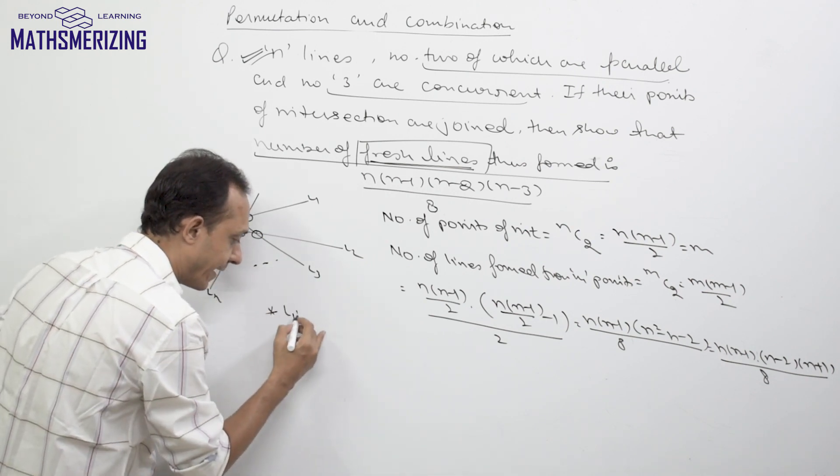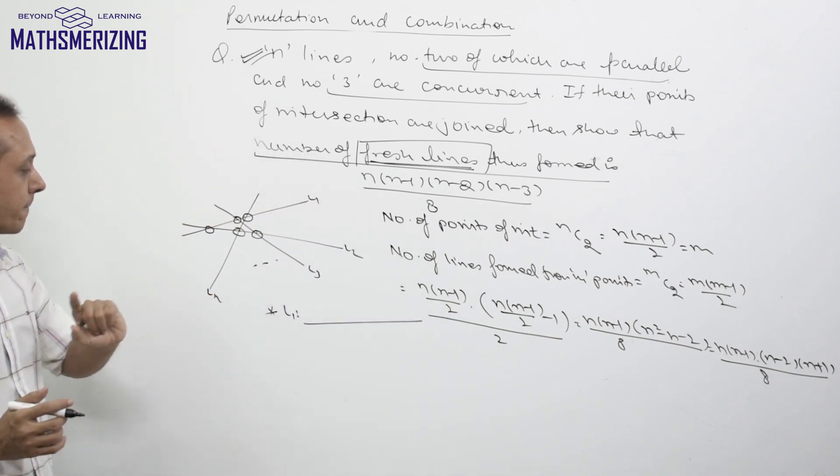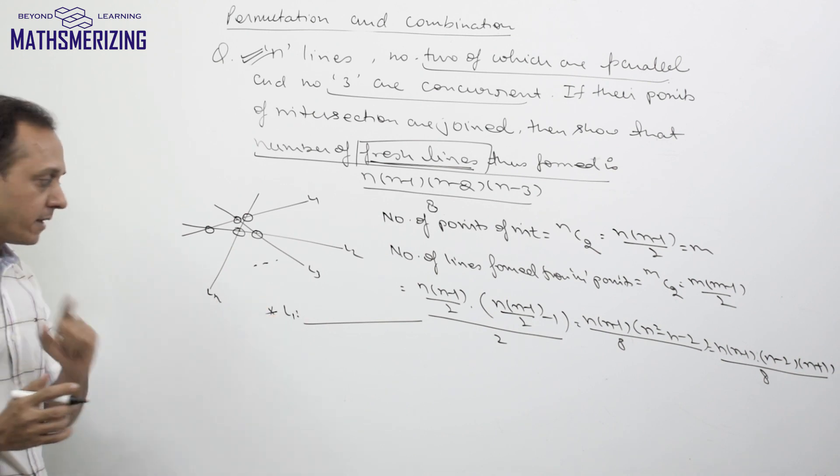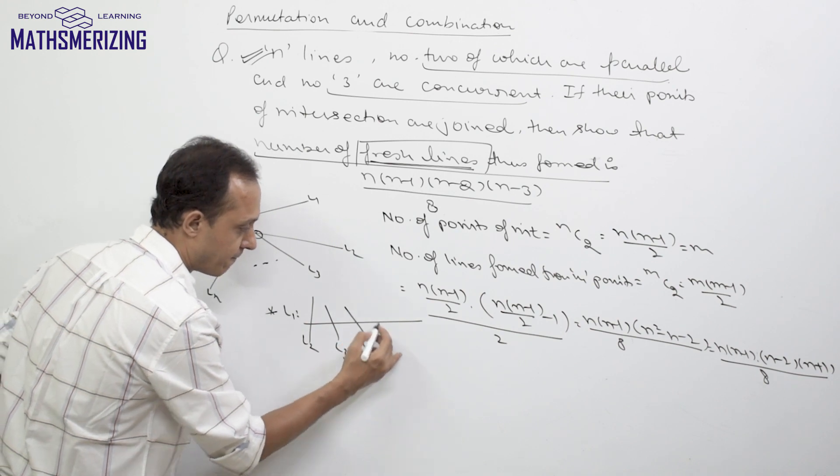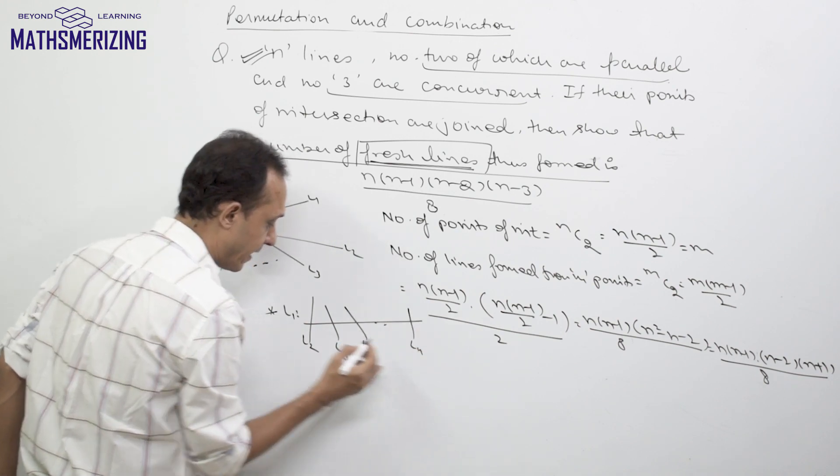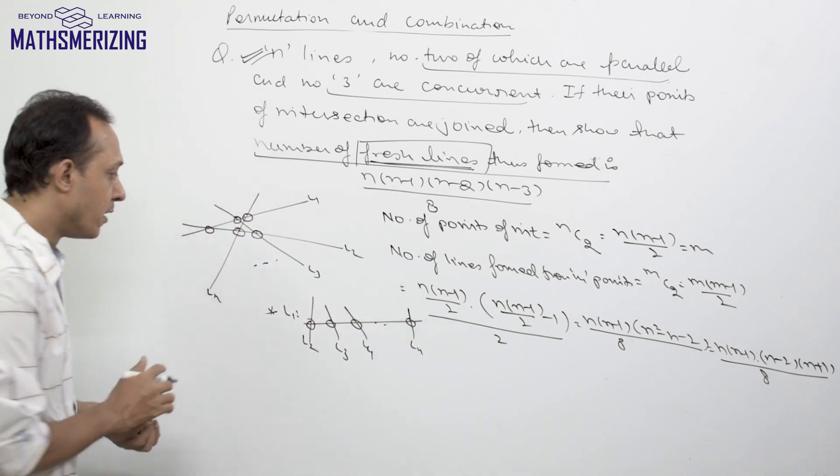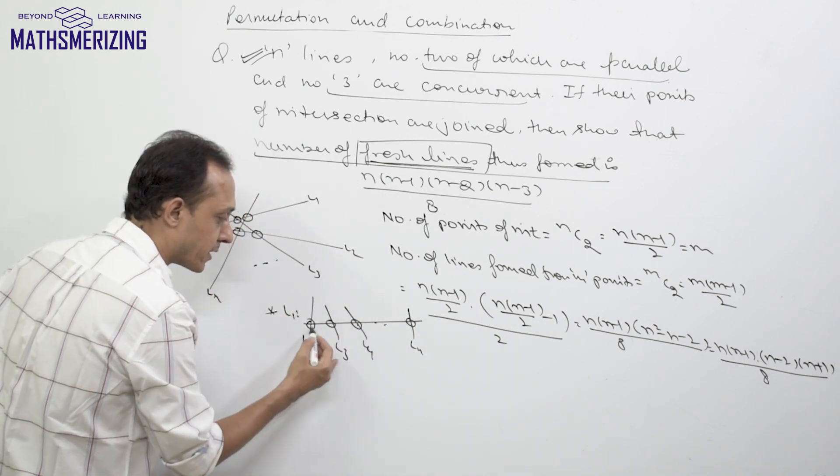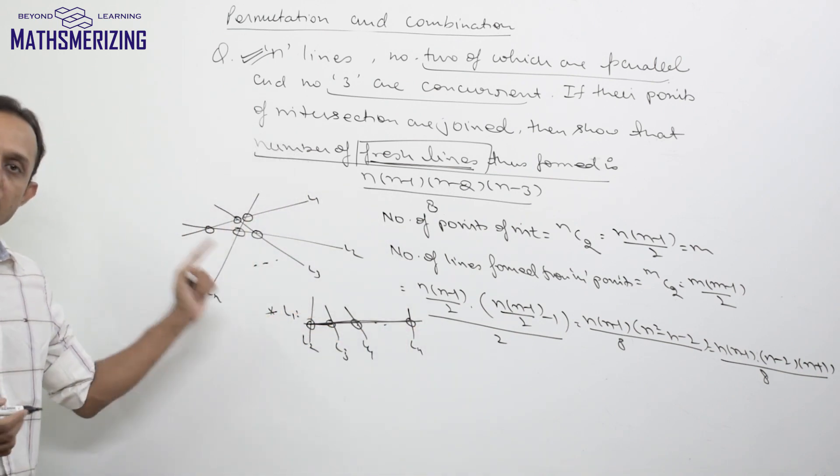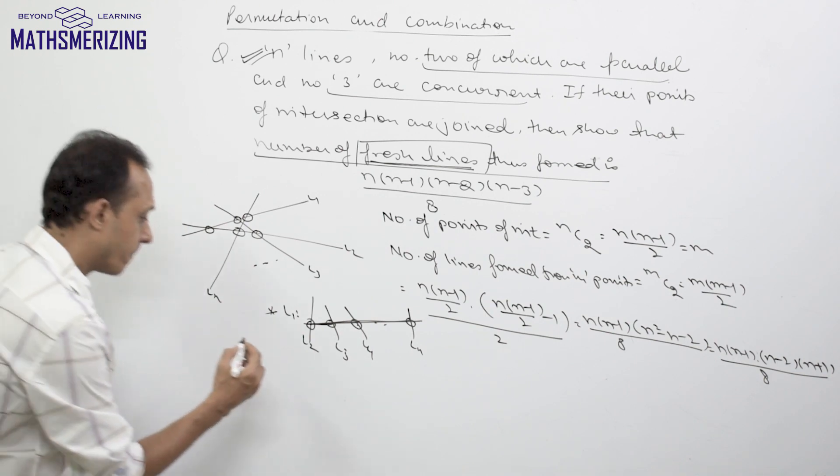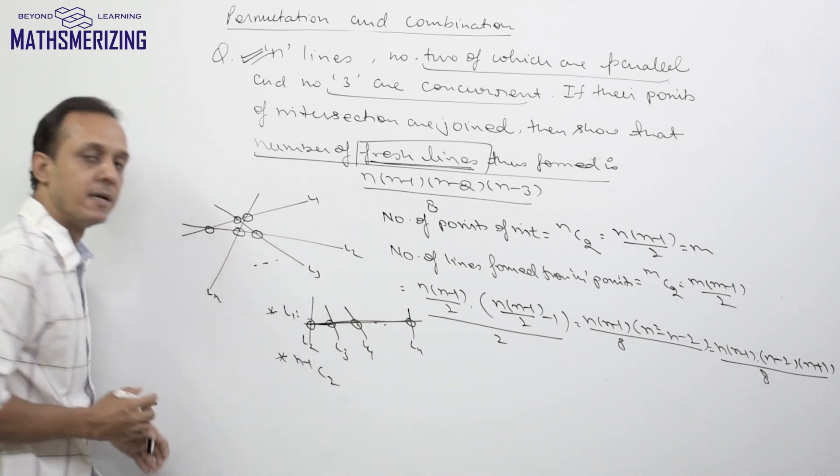Suppose I consider this line l1. On this l1, how many points of intersections will be there? This l1 will intersect every other line: l2, l3, l4, and then ln. So there will be n-1 points of intersection on this line l1. If I select any two points on this line, then every time when I am drawing a line, I will end up getting l1 and not a new line. So in how many ways can I get old line l1? It will be (n-1)C2.